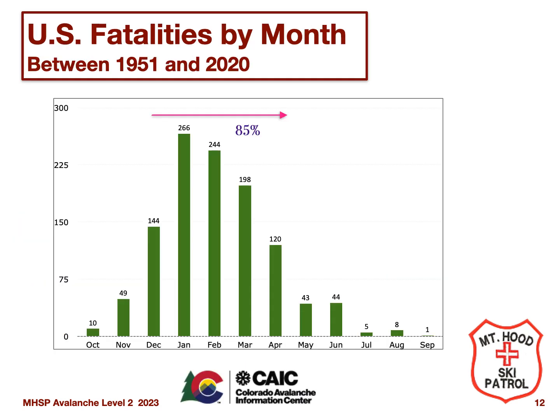This slide indicates the timing of avalanche accidents throughout the year. No surprise: accidents happen in those months with the heaviest snowfall. Eighty-five percent of accidents occur in the December through April window. Please note this is data from North America, so data will be different for other parts of the world.